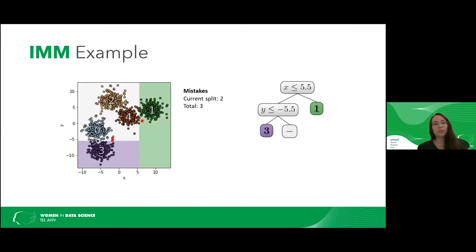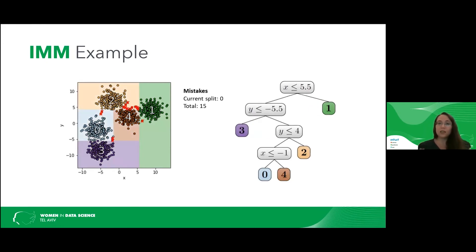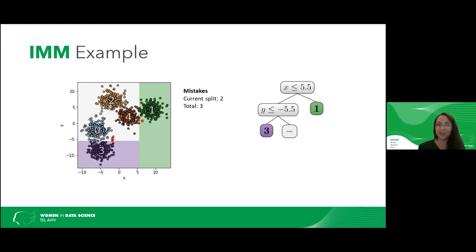In order to understand what it means, let's look at an example. So we have a data set, and first we colored each point with its cluster. Then at each step, what we did is found some split that has a minimum number of mistakes. And then at the end, what we got is a decision tree with five leaves. And this defines an explainable k-means clustering.